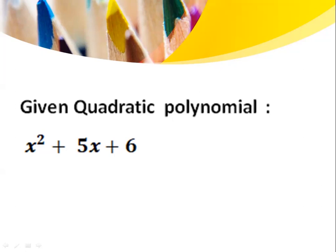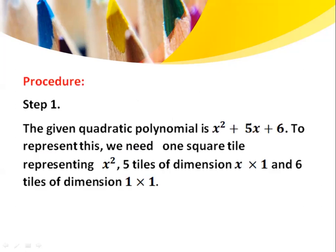Now let us see the procedure. The given quadratic polynomial is x squared plus 5x plus 6. First, to represent this, we need 1 square tile which represents x squared. You can take x to be 10 cm.